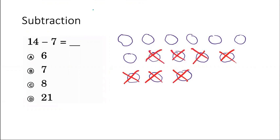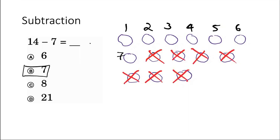So in total we have 1, 2, 3, 4, 5, 6, 7 left. That's our answer.